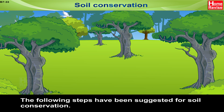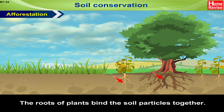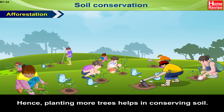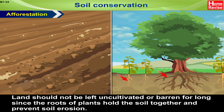Soil Conservation. The following steps have been suggested for soil conservation. Afforestation: the roots of plants bind the soil particles together. Hence, planting more trees helps in conserving soil. Land should not be left uncultivated or barren for long, since the roots of plants hold the soil together and prevent soil erosion.